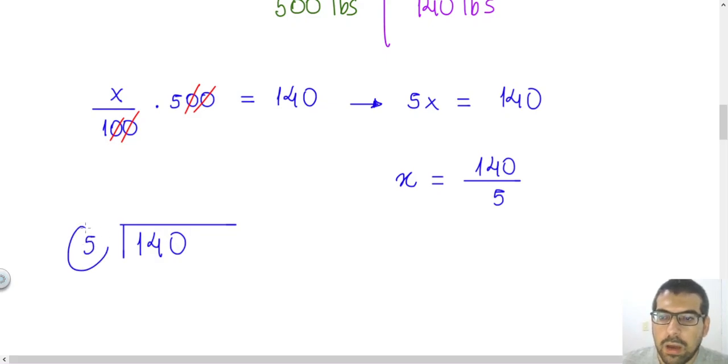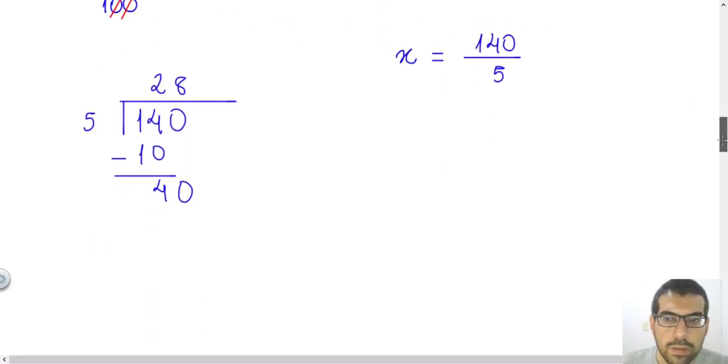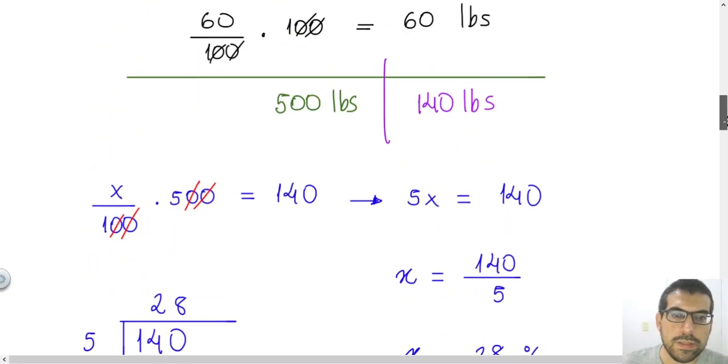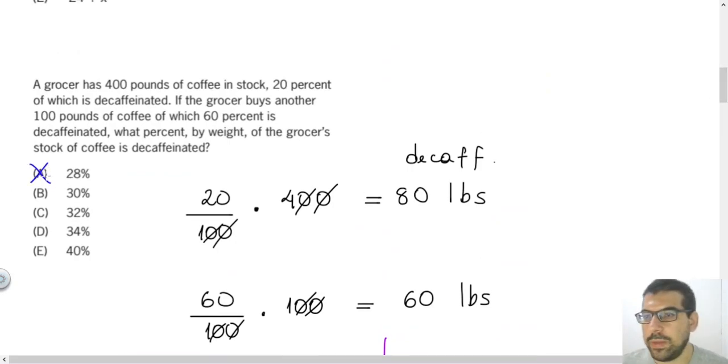We can think how many times 5 goes in 14. And 5 goes in 14 two times, because 5 times 2 is 10. And 14 minus 10 will be 4. I will drop the zero, and I have 40 now. And I can ask how many times 5 goes in 40. It will be 8 times. 5 times 8 will be 40, and 40 minus 40 will be 0. So the quotient, that means the result, will be equal to 28. So 28% of coffee from the stock is decaffeinated. So letter A will be the answer. And let's go to the last question from this video.